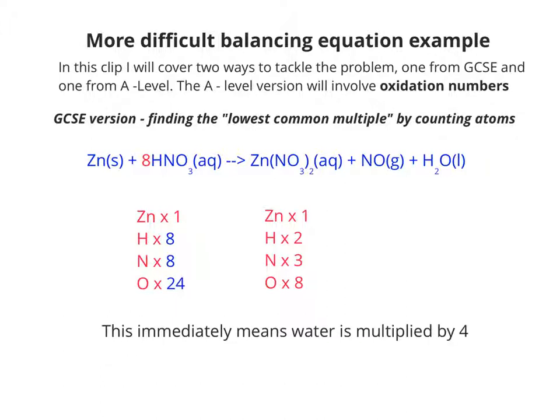So if we adjust the hydrogen, nitrogen, and oxygen count on the left-hand side to bring it up to date now, this immediately means that the water is multiplied by 4 because there needs to be 8 hydrogen on the right-hand side.